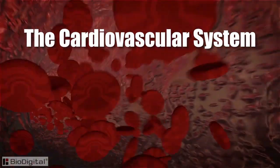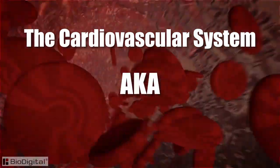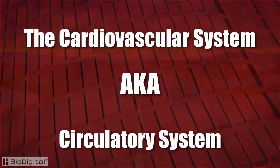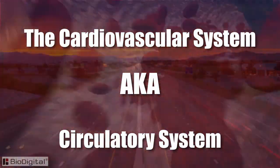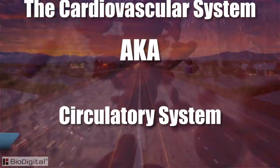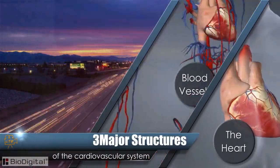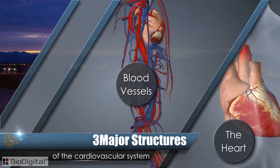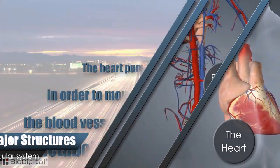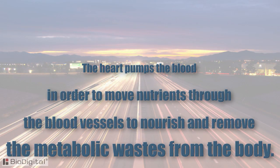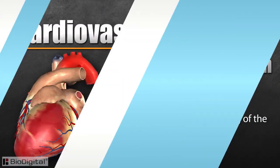The cardiovascular system, also called the circulatory system, is the transportation system of the body. The major structures that make this possible are the heart, blood vessels, and blood. Simply put, the heart pumps the blood in order to move nutrients through the blood vessels to nourish and remove the metabolic waste from the body.